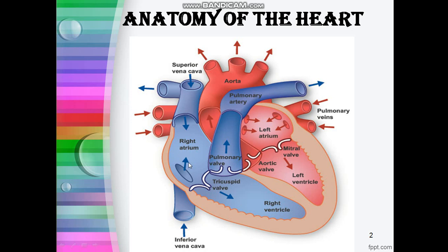Blood flows from the right atrium to the right ventricle through the open tricuspid valve. When the ventricles are full, the tricuspid valve shuts, restricting the flow of blood back from the right ventricle to the right atrium. The blood then leaves the right ventricle through the pulmonary valve and pulmonary artery for oxygenation. In the lungs, the blood gets purified and oxygenated, and the oxygen-enriched blood enters the left atrium through the pulmonary veins.